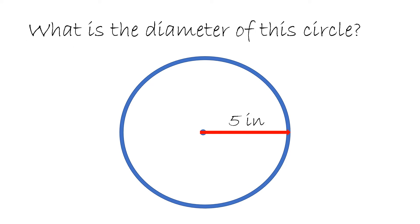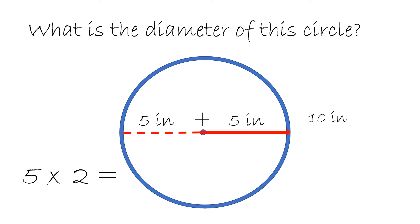What is the diameter of this circle? Here we are given the radius, which is 5 inches. So what we do is we just take 5 plus 5 and that will be 10 inches. Or we could take 5 times 2 and they will give us the same answer, 10 inches. So we double the radius.